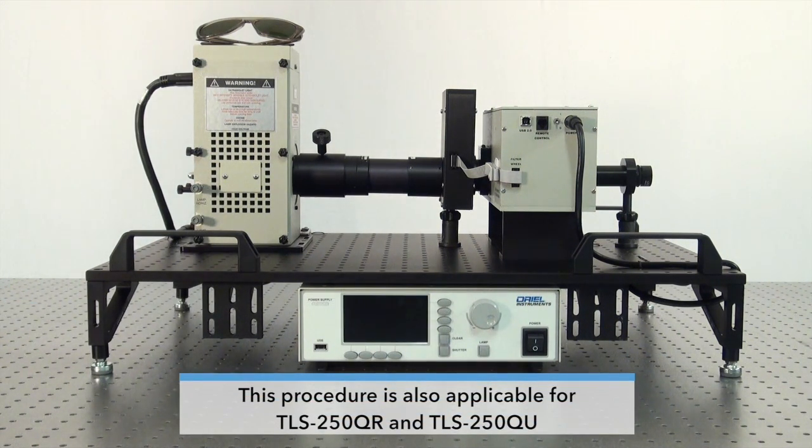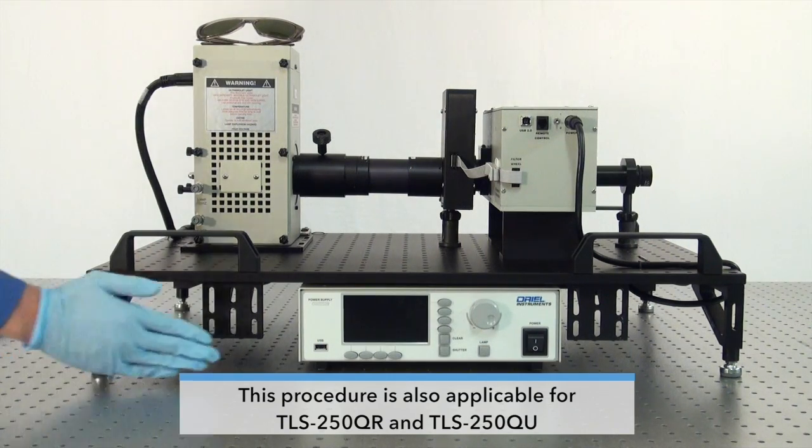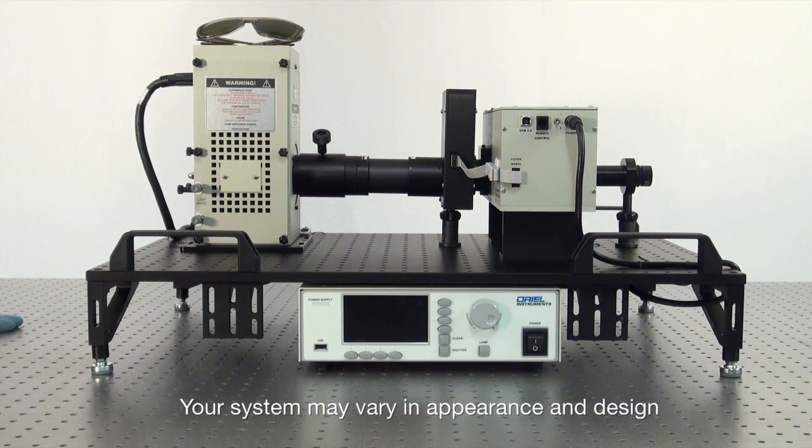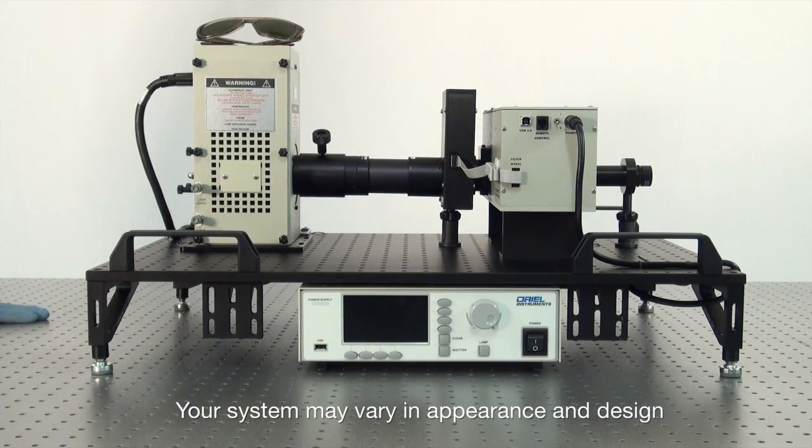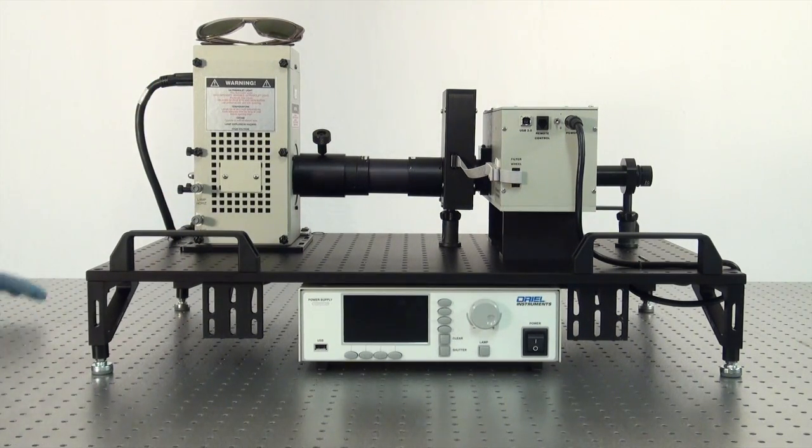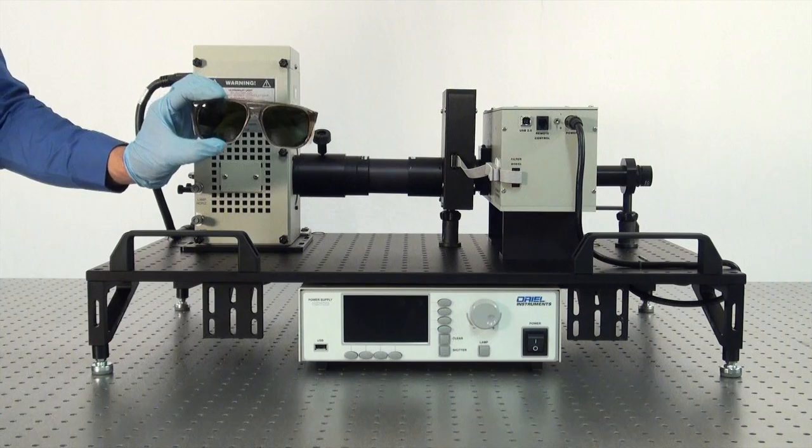Before you begin, it's very important that you follow safety procedures and make sure both the power supply and the monochromator are unplugged and turned off. It's also important that you use the right safety equipment. These are powder-free gloves because you never want to touch a lamp with your bare hands. It's also important to use safety glasses.